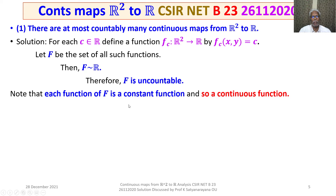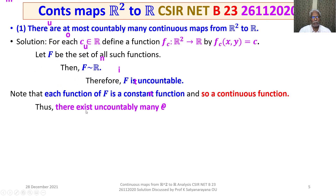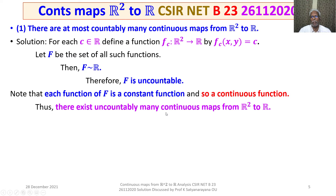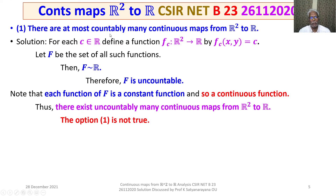Note that each function in F is a constant function and so it is a continuous function. Therefore F is uncountable and each function of F is continuous. Thus there exist uncountably many continuous maps from R square to R, and therefore option 1 is not true.